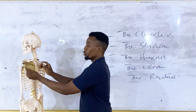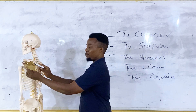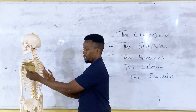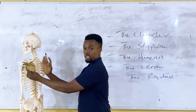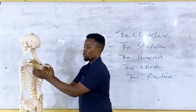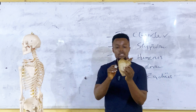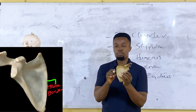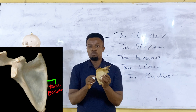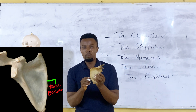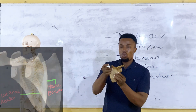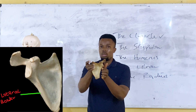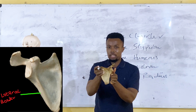Looking at the position, this part of the scapular bone comes medially — it is closer to the midline. So this part is referred to as the medial border of the scapular, while this part is the lateral border of the scapular.